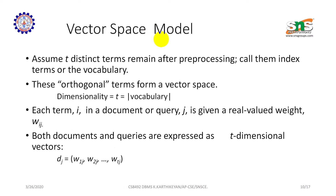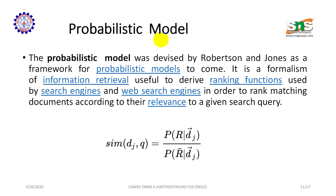Vector space model: Assume t is the number of distinct terms remaining after pre-processing — called index terms or the vocabulary. These orthogonal terms form a vector space of dimension t equal to the vocabulary size. Each term i in a document or query j is given a real-valued weight W_ij. Both documents and queries are expressed as t-dimensional vectors: (W_1j, W_2j, ..., W_tj).